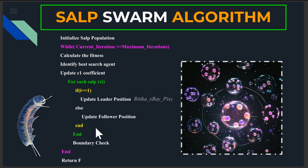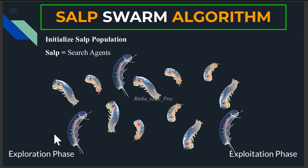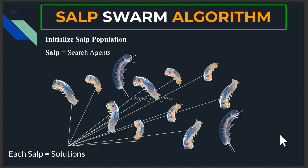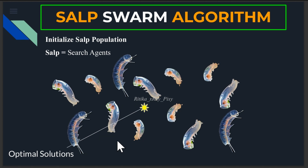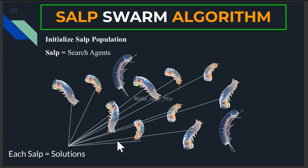Similarly to how salps navigate the ocean, this algorithm uses group intelligence to explore and exploit the search space. Salps are modeled as search agents. As in population-based algorithms, we start with a random population in the search space — we randomly initialize the salp population. The population is then divided into two groups: leaders and followers.